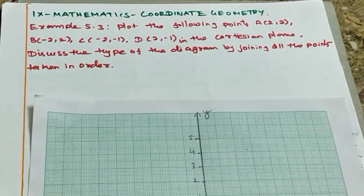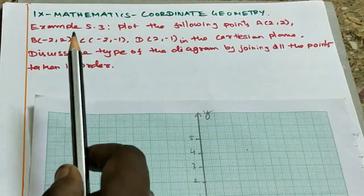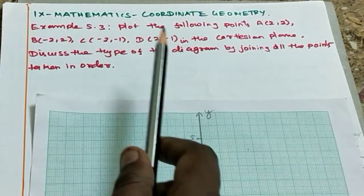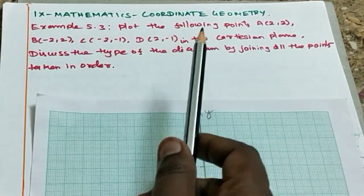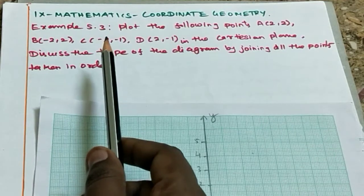Dear students, welcome back to our channel. Today we start 9th standard mathematics, coordinate geometry, that is the 5th chapter, example 5.3.